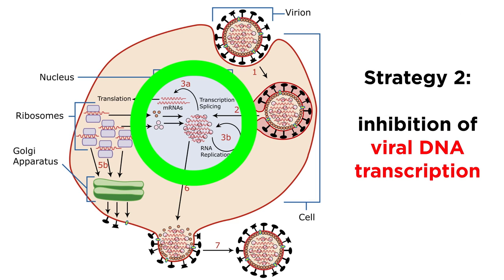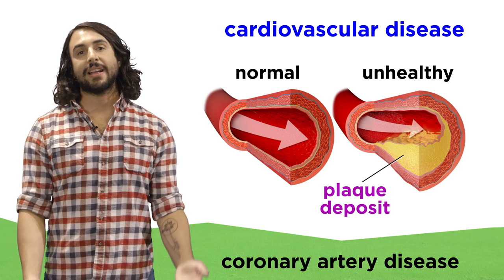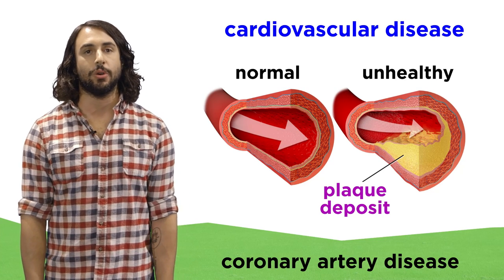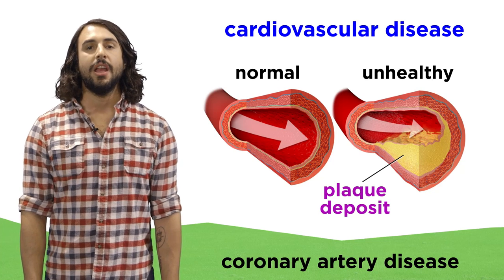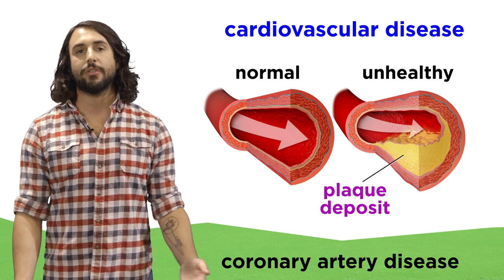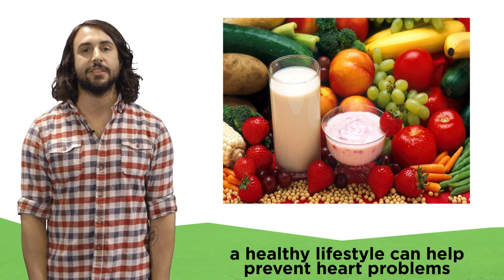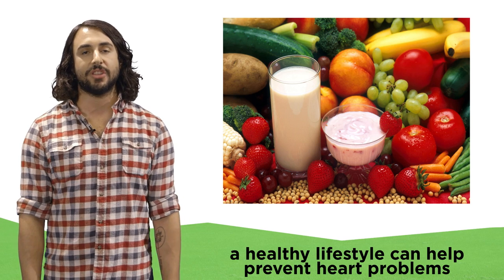Other drugs can inhibit the transcription of viral DNA once it is inside the cell, and ribozymes are specially designed enzymes that can target viral DNA and chop it up so it can't be transcribed. Whatever the case may be, any legitimate treatment must be preceded by a sophisticated knowledge of the biochemistry involved. By contrast, some diseases are strictly physiological, like many forms of cardiovascular disease. These involve the heart or blood vessels, and can occur because of poor diet, lack of exercise, or other lifestyle factors. These are the ones in which a holistic approach to general health can be effective in preventing, but there are also medications that offer some assistance.